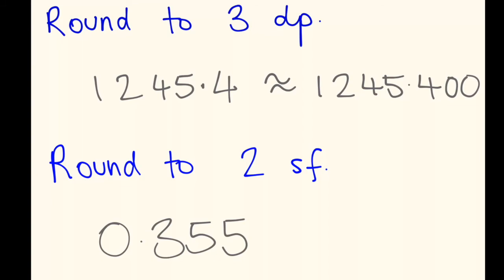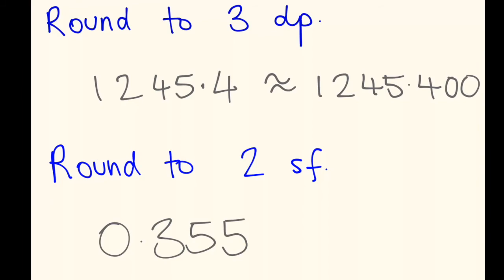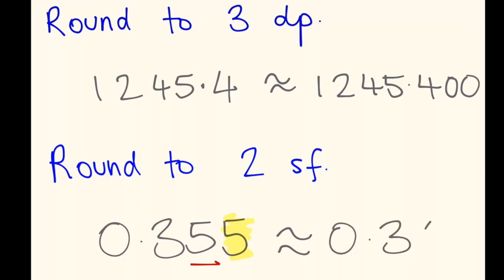You might get an example like round to two significant figures. And you'll be given a number like 0.355. The first significant figure is the first number from the left that's not a zero, so the first significant figure is actually the three. The second significant figure is the five. So I need to round off to that hundredths place. Highlight the number next door. Is it five or more? Yes, it is. So I need to add one to that five. So 0.355 rounded to two significant figures will be 0.36.